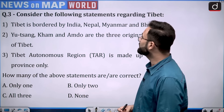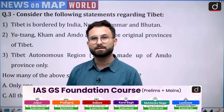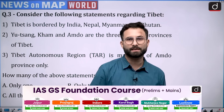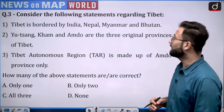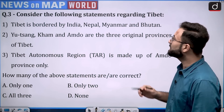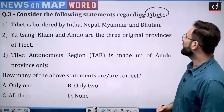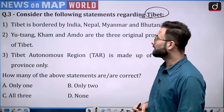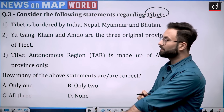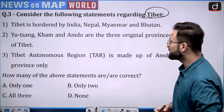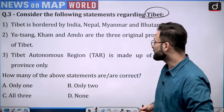Now moving further to question number three. Consider the following statements regarding Tibet. Tibet was recently in news — the Dalai Lama has been in news because a delegation from the USA came to meet them and China had some concern with respect to that. The statements are: first, Tibet is bordered by India, Nepal, Myanmar and Bhutan. Second, Ü-Tsang, Kham and Amdo are the three original provinces of Tibet. Third, Tibet Autonomous Region (TAR) is made up of Amdo province only. We will see how many of the statements are correct.